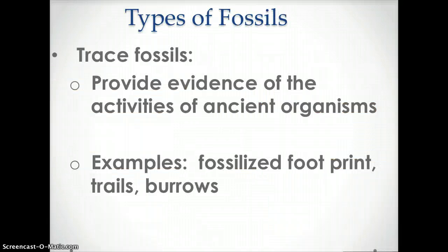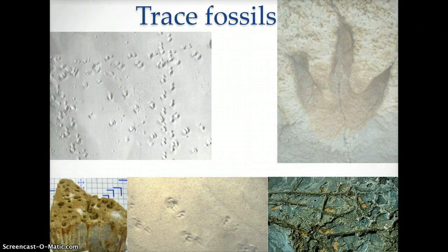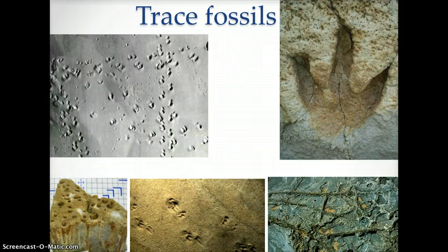Trace fossils are fossils that provide evidence of the activities of ancient organisms. Trace fossils can also overlap with other types of fossils — for example, an indent of a footprint would be both a mold and a trace fossil. Other examples include fossilized trails and burrows. These three fossils show footprints; they are trace fossils but also molds. These two fossils show trail marks or burrows.